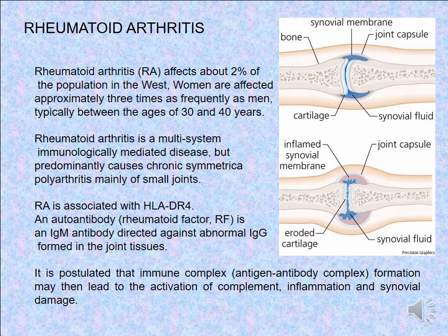Rheumatoid arthritis is a multi-system, immunologically mediated disease that predominantly causes chronic, symmetrical polyarthritis mainly of small joints. Rheumatoid arthritis is associated with HLA-DR4 and autoantibodies — rheumatoid factor. Rheumatoid factor is an IgM antibody directed against abnormal IgG from the joint tissue. It is postulated that immune complex — antigen-antibody complex — formation may lead to the activation of complement, inflammation, and synovial damage.